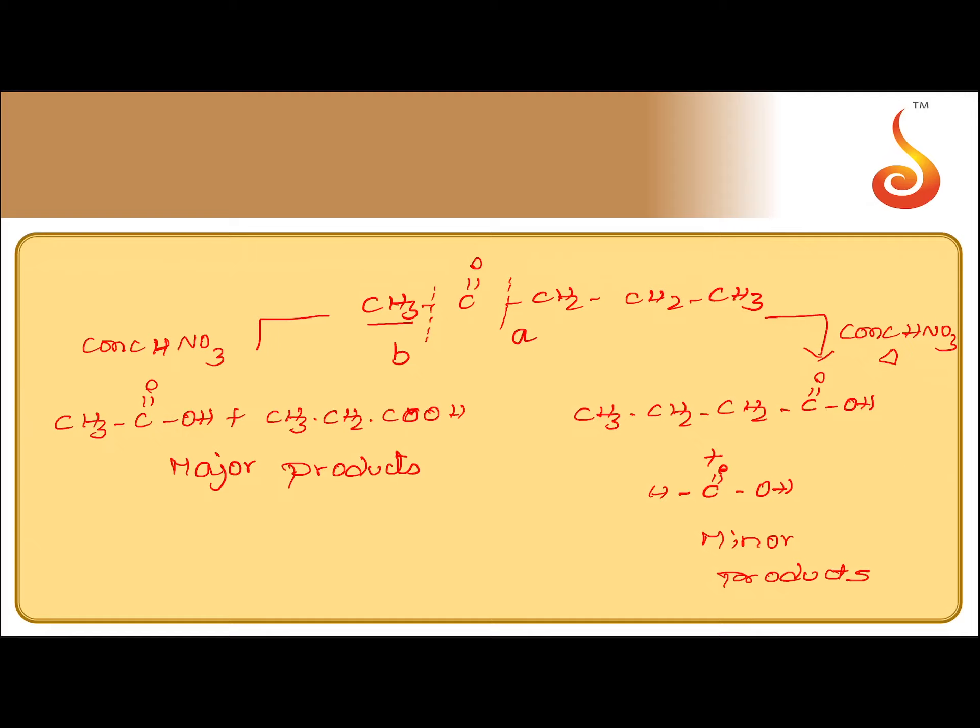In the case of unsymmetric ketones such as butan-2-one and pentan-2-one, the ketone group stays preferentially with the smaller alkyl group. This rule is called Popov's rule. The C=O group goes with the alkyl group having fewer carbon atoms, giving a mixture of two carboxylic acids both having fewer carbon atoms than the original ketone.